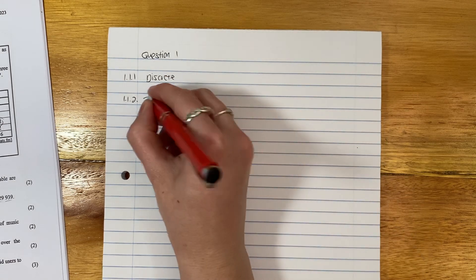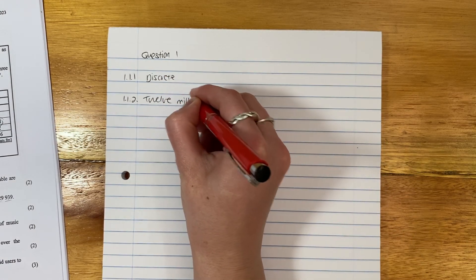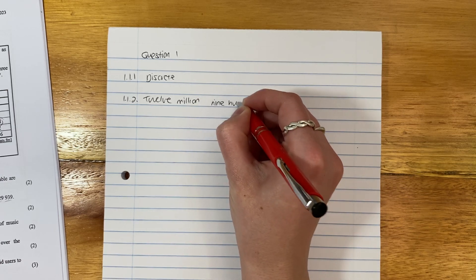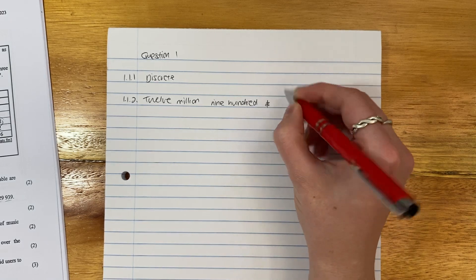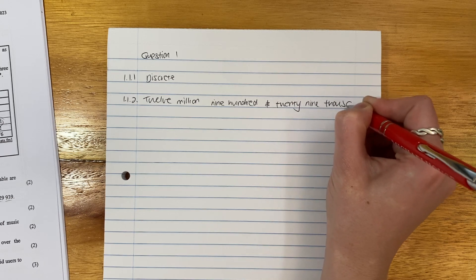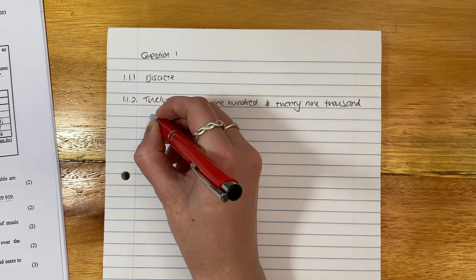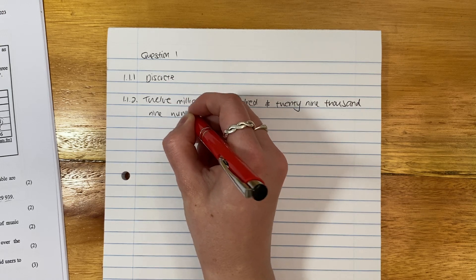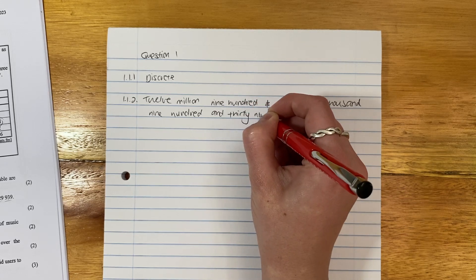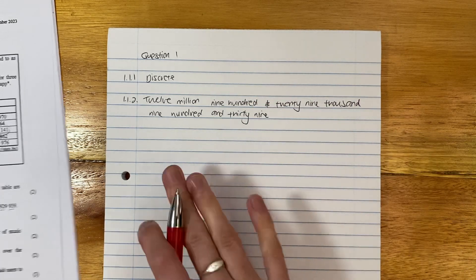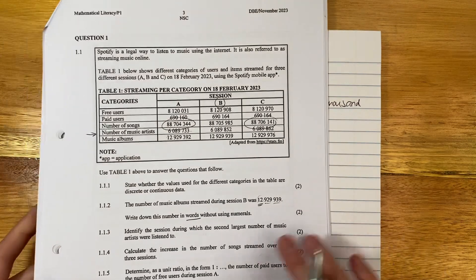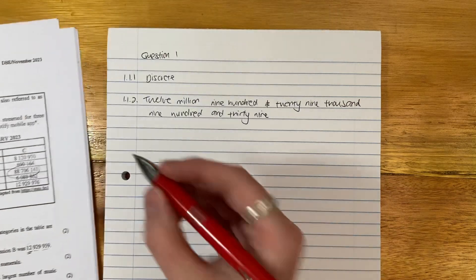So we have 12 million, nine hundred and twenty-nine thousand, nine hundred and thirty-nine. Do you see that there's no numbers there? When I say no numbers, there's no digits. I've written it all out in words. Two marks. Perfect.